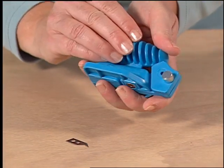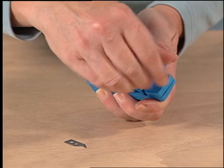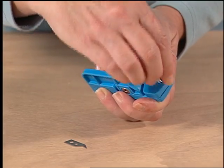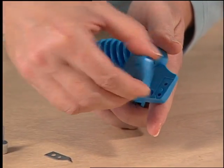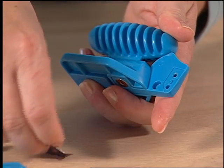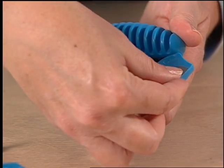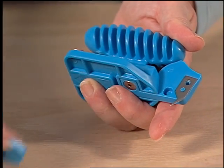To install a blade onto the Logan Foamworks freestyle cutter, first remove the knob and the blade cover. Place one blade onto the tool and replace the blade cover.